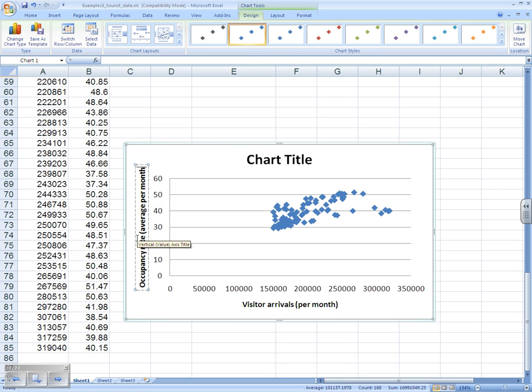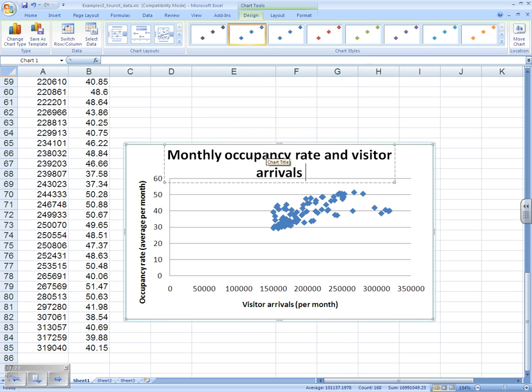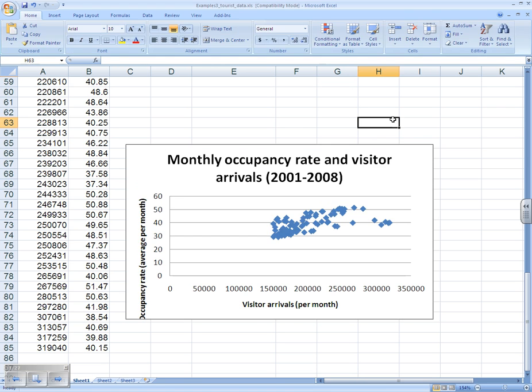Always plotting the data to check whether linear regression is appropriate. Have we got a positive or a negative association between our two variables? Can we fit a line of best fit through the points? In this case, there appears to be a positive relationship between the occupancy rate and the visitor arrivals. As X increases, Y is also increasing. So linear regression is appropriate.